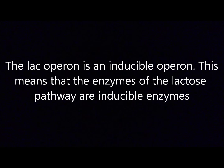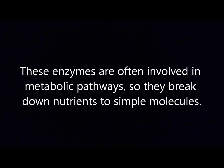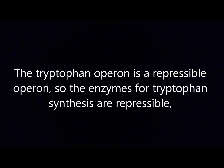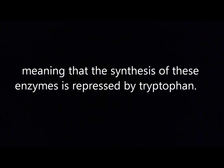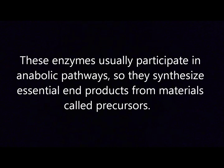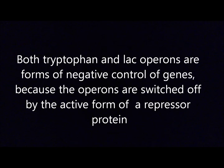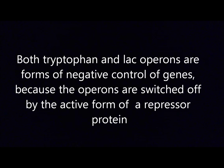The lac operon is an inducible operon, meaning the enzymes of the lactose pathway are inducible enzymes whose synthesis is induced by a chemical — in this case, allolactose. These enzymes are often involved in catabolic pathways, so they break down nutrients into simpler molecules. The tryptophan operon is a repressible operon, so the enzymes for tryptophan synthesis are repressible, meaning their synthesis is repressed by tryptophan. These enzymes usually participate in anabolic pathways, synthesizing essential end products from raw materials called precursors. By synthesizing just enough end products to meet its needs, the cell can save its organic precursors and energy for more important processes. Both the tryptophan and lac operons are forms of negative control of genes because the operons are switched off by the active form of the repressor protein.